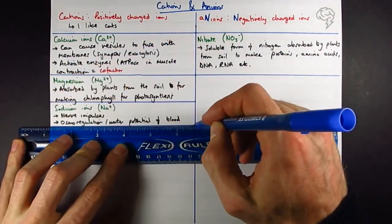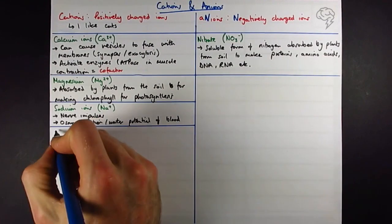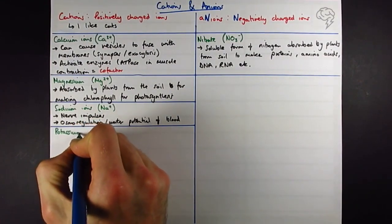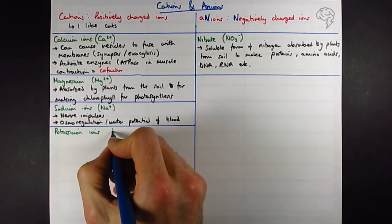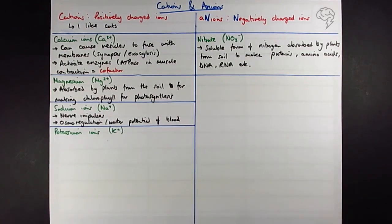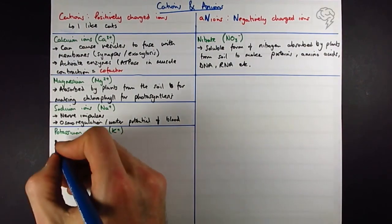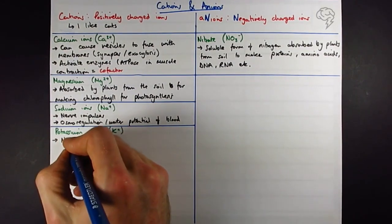So next up potassium ions. Potassium ions are K+. They are required in nerve impulses is all you need to know about them.